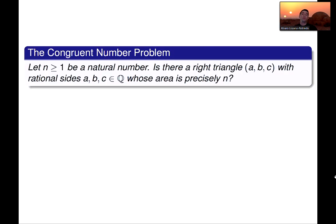All right, so another way to pose the problem, which is the most common way nowadays, is given a natural number n, is there a right triangle ABC with rational sides ABC whose area is precisely n. And my favorite number is actually related to this problem, is related to whether 157 is a congruent number.